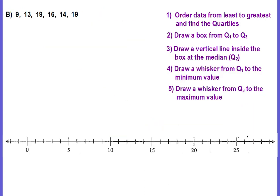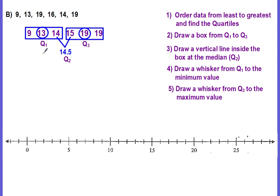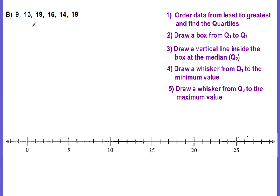Let's do another one. Here's our data set — first thing you want to do is order from least to greatest. The numbers are 9, 13, 19, 16, 14, and 19. The smallest number is 9 and the largest is 19. Once you have them in order, you find your quartiles. So in order we have: 9, 13, 14, 16, 19, 19.